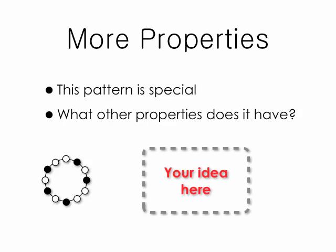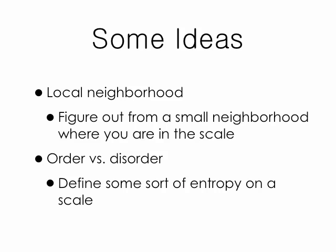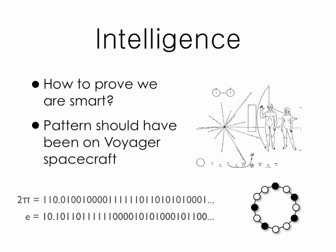What else is hiding in there? What other properties does this pattern have? Maybe you can find some more. Here are some ideas to get you started. It seems that, with these scales, you need the least amount of local information to figure out where you are. In another direction, perhaps we could define some sort of entropy measure on a scale, and see if the pentatonic-diatonic has a distinctive value. When NASA launched the Voyager spacecraft, which is now leaving the solar system, they inscribed on it some images that were intended to communicate to other intelligent beings. How would you prove you were smart? Perhaps the binary expansions of 2 pi, or E? I think the pentatonic-diatonic pattern is just as special.